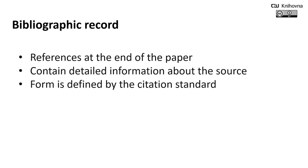Bibliographic record is the reference at the end of the paper. It usually contains detailed information about the source, and its form is again defined by the citation style. You can also use a bibliography as a list of sources that could enhance your knowledge — for example, if you're reading an interesting article or a nice book, you might look to the bibliography for additional sources.